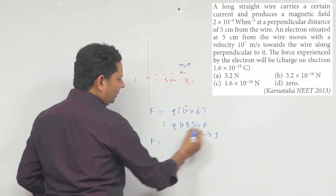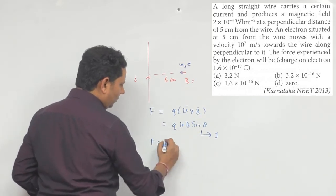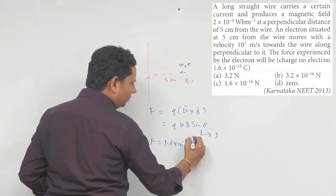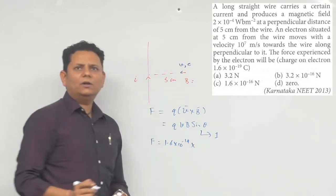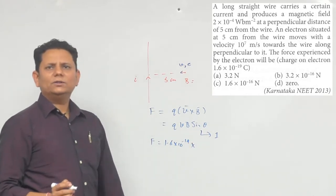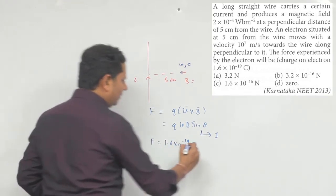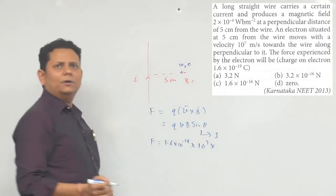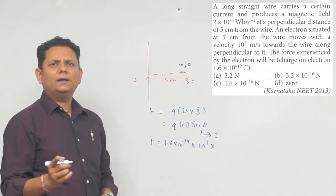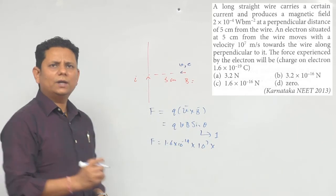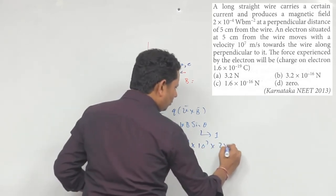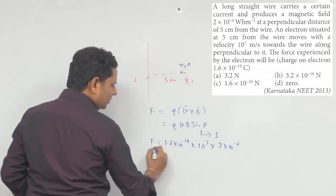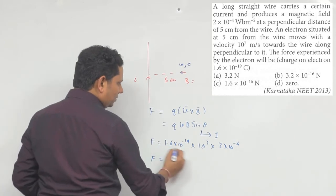So the net force value will be F = qvB. q is known as 1.6 into 10 to the power minus 19 Coulomb, multiplied by the velocity which is 10 to the power 7, and B whose value is given as 2 into 10 to the power minus 4.